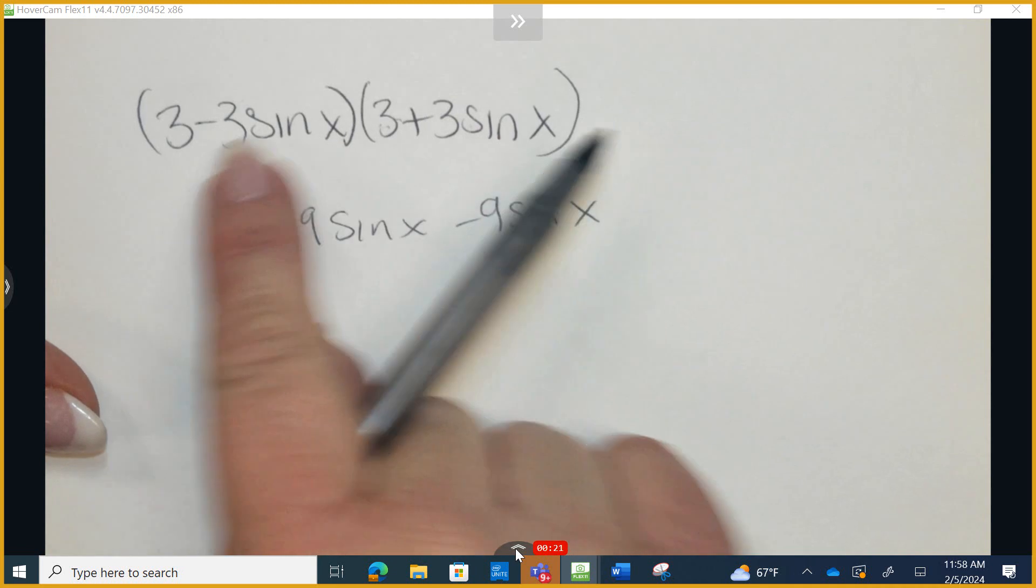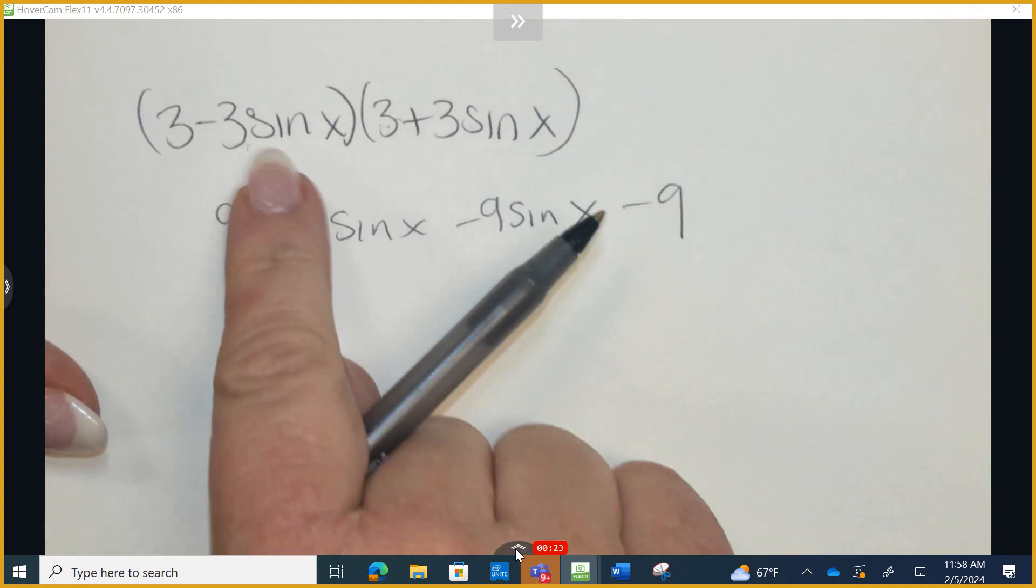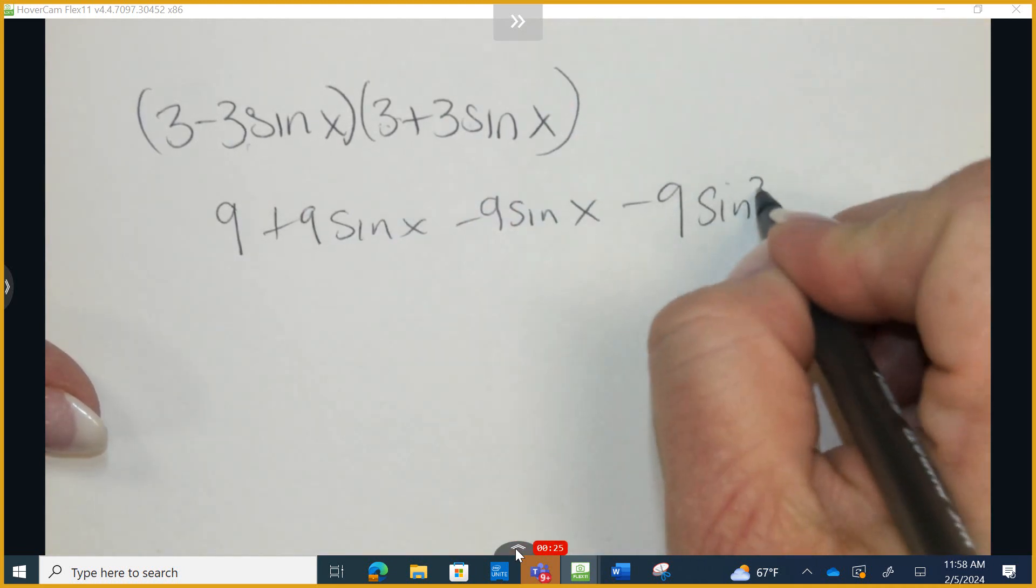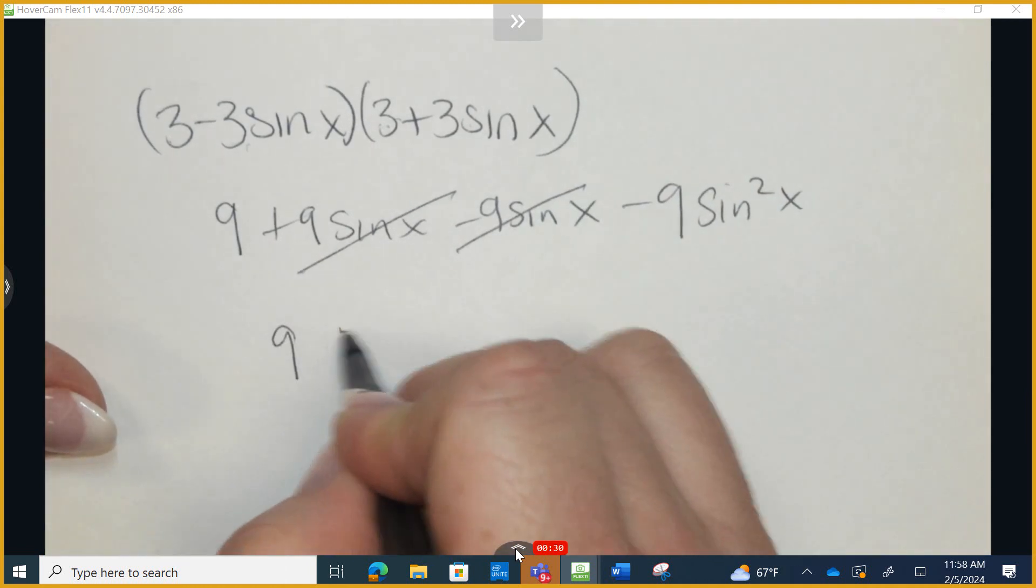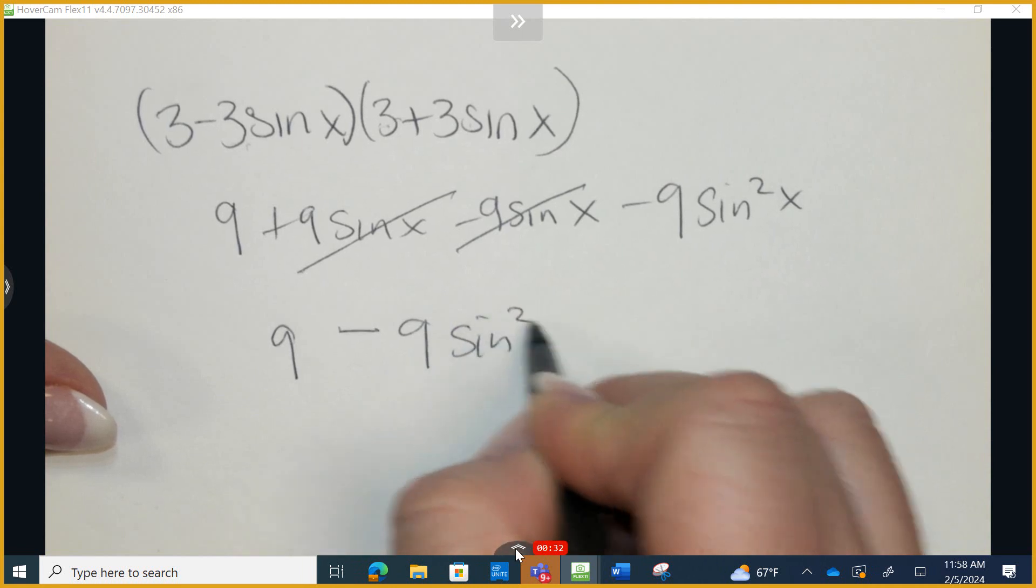And the last, negative 3 times positive 3 is negative 9, but I have 2 sine, sine squared. These are additive inverses. They're going to cancel out, and I have 9 minus 9 sine squared.